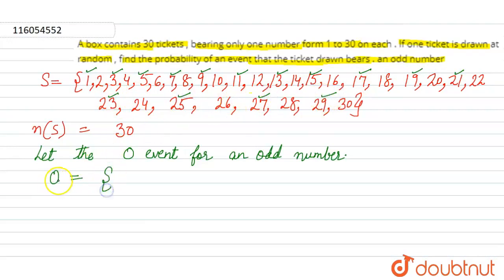Odd numbers are 1, 3, 5, 7, 9, 11, 13, 15, 17, 19, 21, then 23, 25, 27, 29. These are our odd numbers. So for odd numbers, event O is 1, 3, 5, 7, 9, 11, 13, 15, 17, 19, 21, 23, 25, 27, and 29.